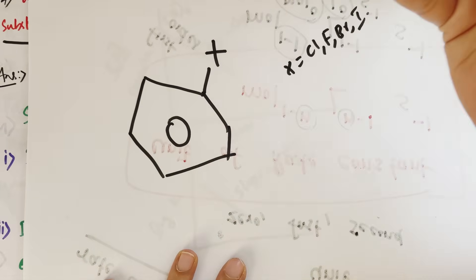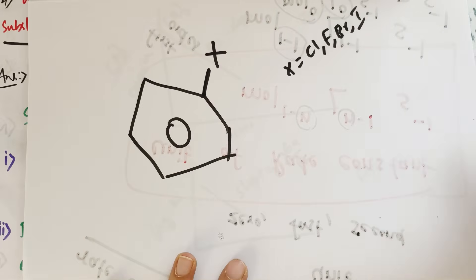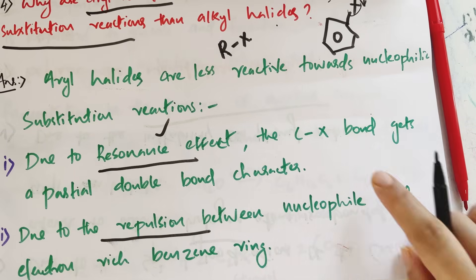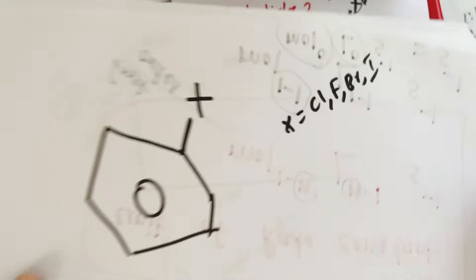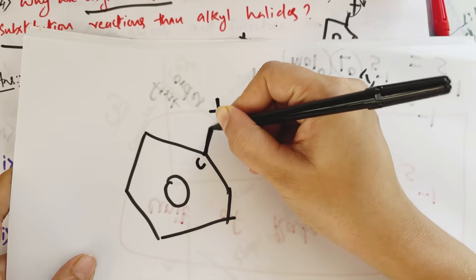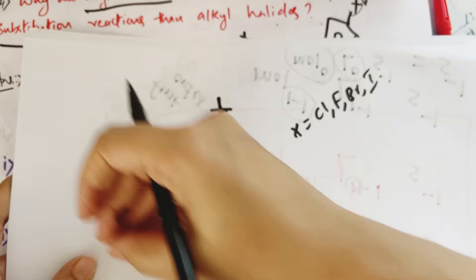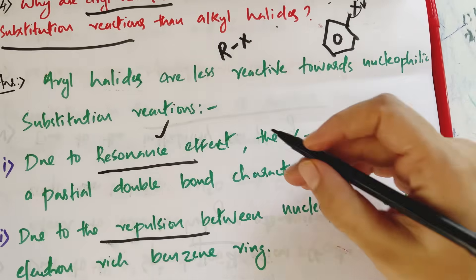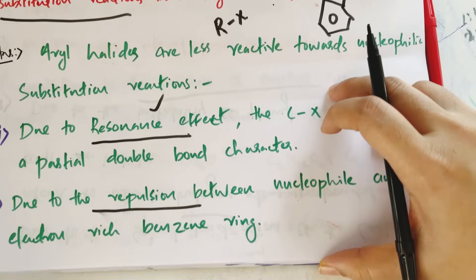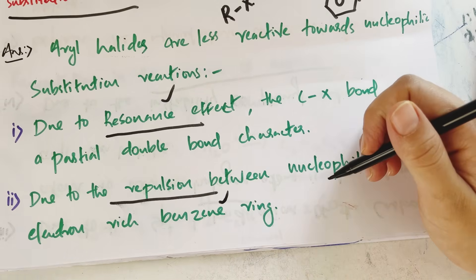Due to resonance, the C-X bond acquires partial double bond character, making it stronger. There is also repulsion between the nucleophile and the electron-rich benzene ring, making attack difficult.